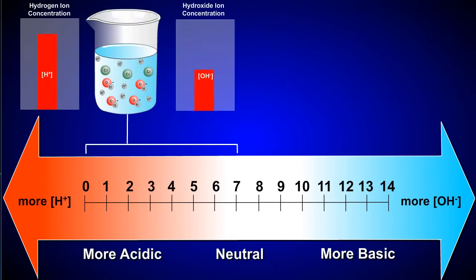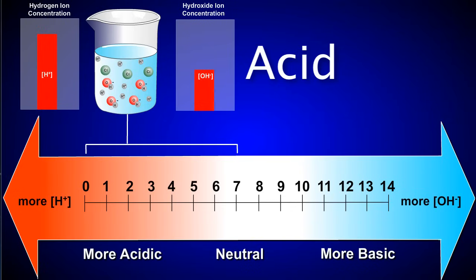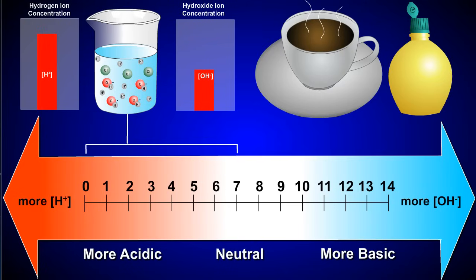When a substance has a pH of less than 7, it's classified as an acid and releases a greater concentration of hydrogen ions. The more hydrogen ions that are released, the more acidic the substance. Acids tend to taste sour. Lemon juice, stomach acid, and coffee are all examples of acids.